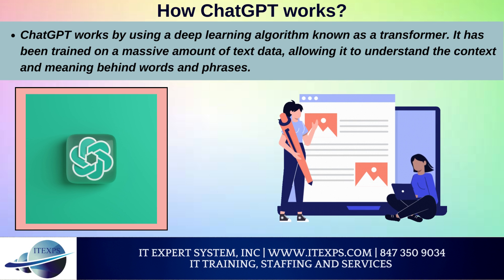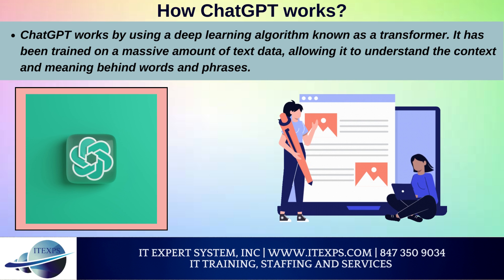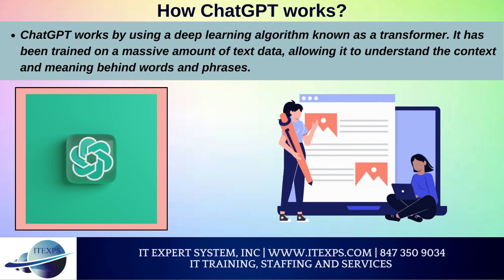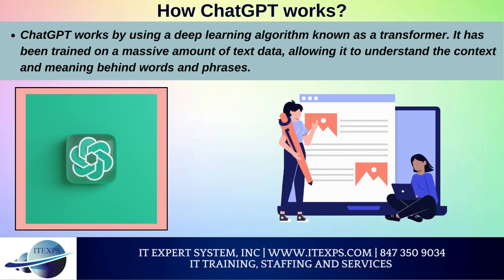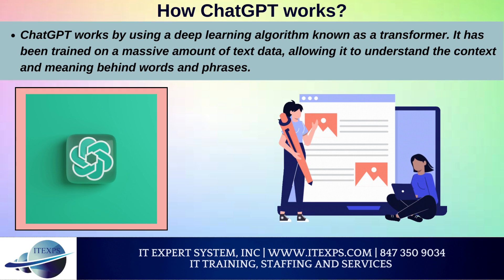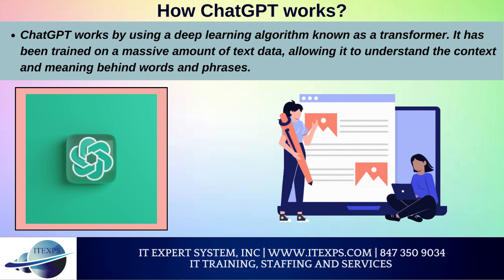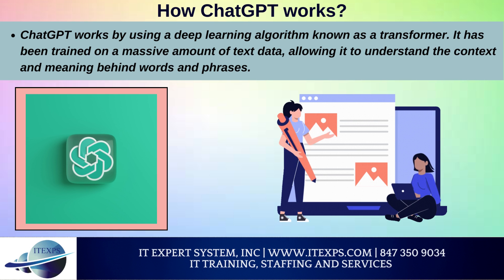To generate this response, the model first uses an encoder to represent the input in a numerical format. This numerical representation is then passed through multiple layers of the transformer architecture, which analyze the input and generate a prediction. Finally, the decoder generates a response by using the predictions made by the transformer and generates the output text. The generated response is based on the training data the model has been exposed to, and it is designed to generate outputs that are coherent and relevant to the input.